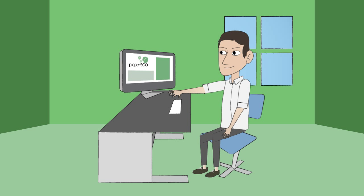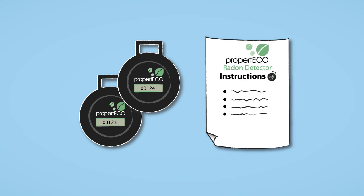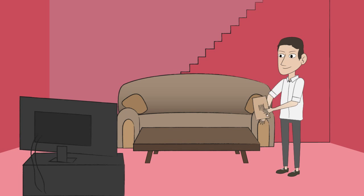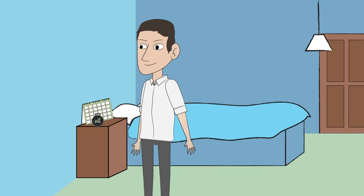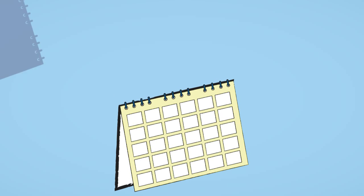We'll send you a kit containing two discrete detectors and instructions. Position the detectors in your house, one in the living room and one in a bedroom. Leave the detectors in place for three months.